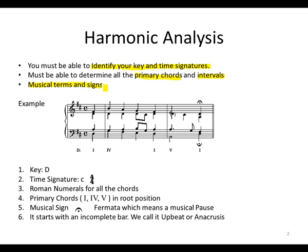Here is our example passage. We can see that the passage is in D major — written with a capital letter — it has two sharps, which are F sharp and C sharp. Our tonic chord, or one chord, starts with the bass note of D, which is why we are convinced that the passage is in D major.